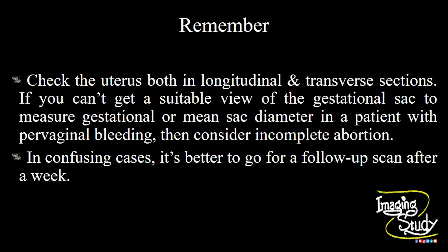Now the take-home message. Check the uterus both in longitudinal and transverse sections. If you can't get a suitable view of the gestational sac to measure the gestational or mean sac diameter in a patient complaining of pervaginal bleeding, then consider incomplete abortion. In confusing cases, it's better to do a follow-up scan after one week to avoid overdiagnosis.